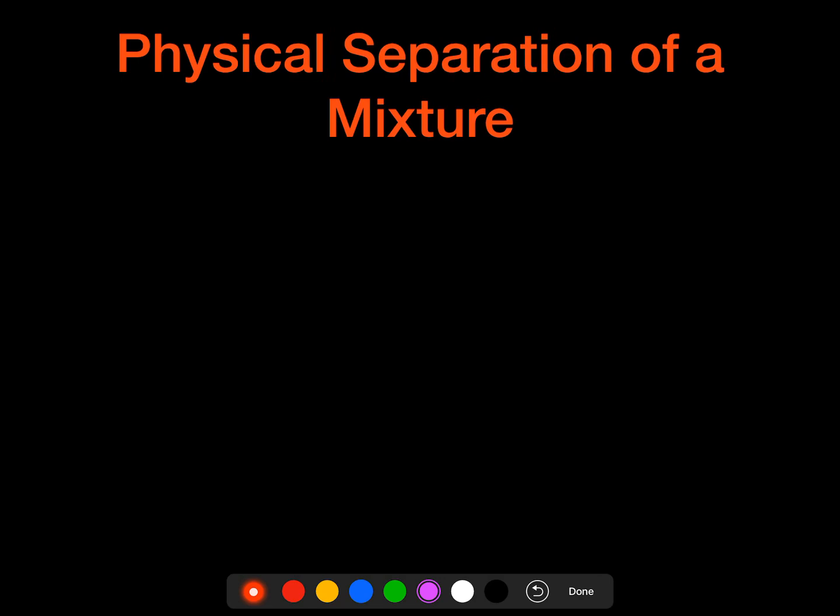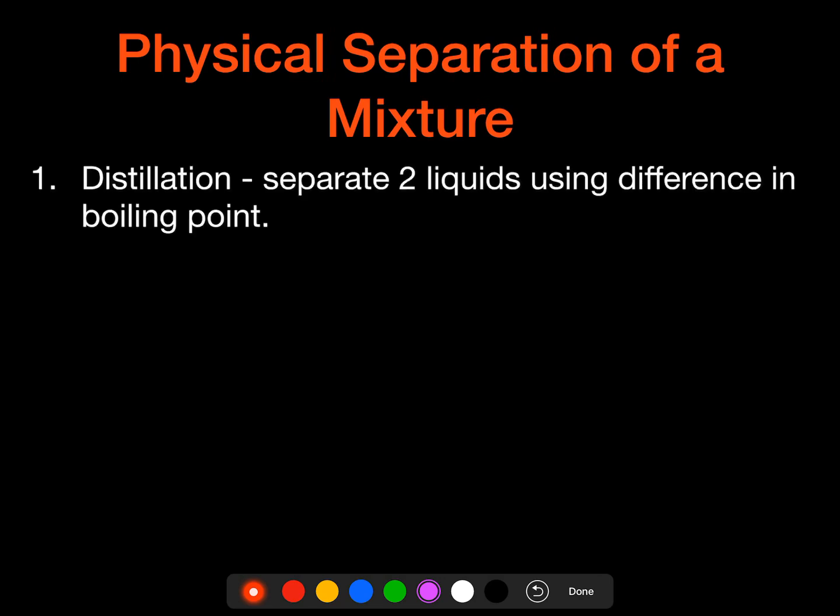So how do we go about physically separating a mixture? We're going to use these physical processes. The first one is distillation. We can separate two liquids using differences in boiling point. We also use this to purify water, to make that distilled water. So we can use that for more than just liquids, but I think liquids are a good example.